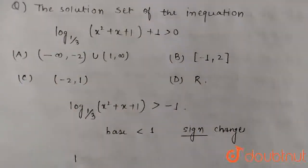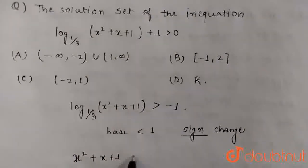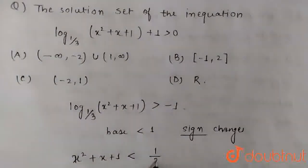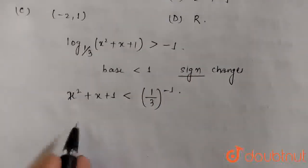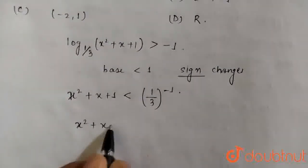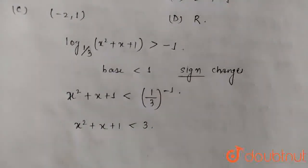So we can write, taking it anti-log, x² + x + 1 is less than (1/3)^(-1). Or what we can write here, x² + x + 1 is less than 3, taking the inverse of 1/3.